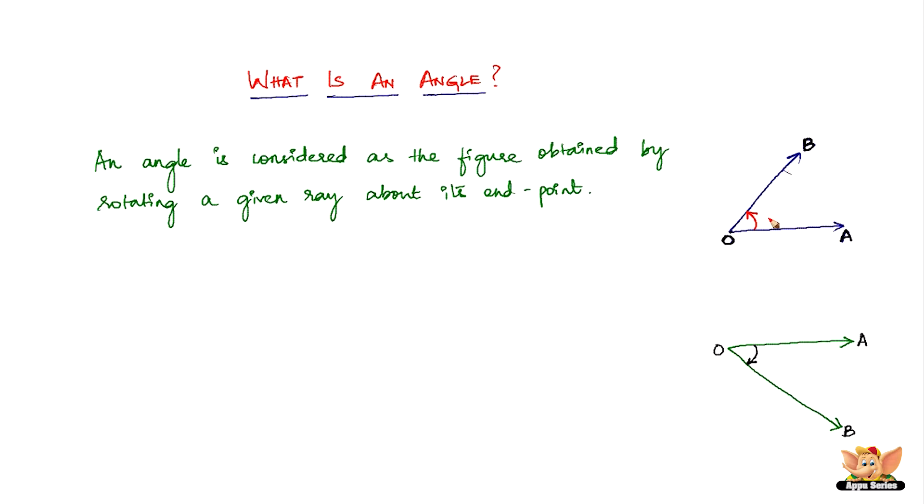That's called a generating line of the angle—the one in between every time it moves. The initial position OA is called the initial side.